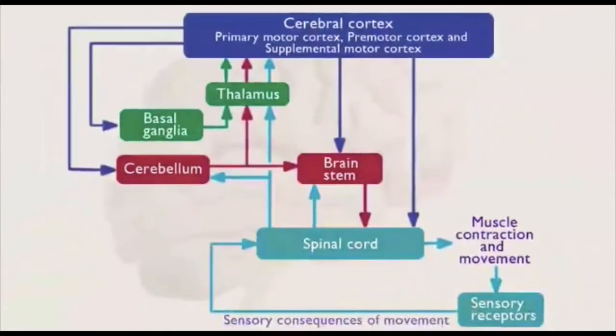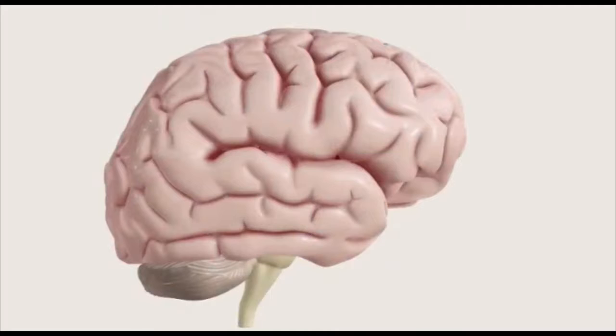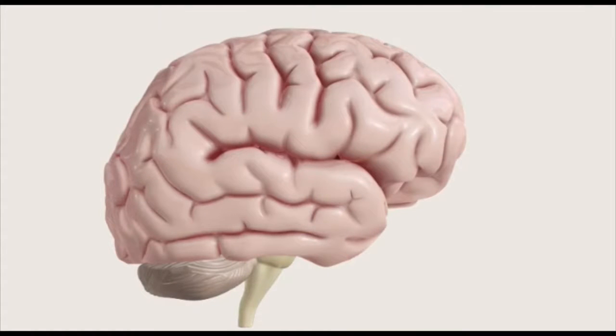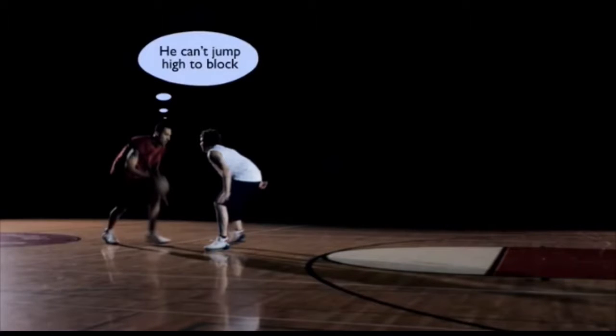The cortex sends signals down to the subcortical brain regions to execute and coordinate those movements. Essentially, the cortex is the idea person, and the subcortical regions are the technicians. The cortex is in charge of determining what you will do and how you will do it. In a game of basketball, the cortex would analyze sensory information, such as the location of an opponent.